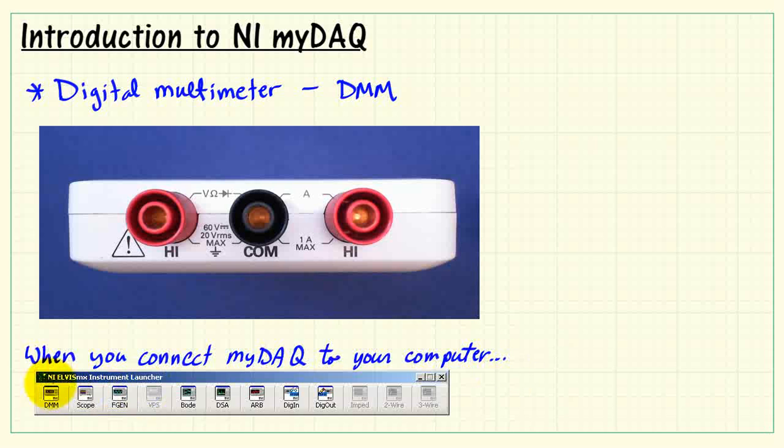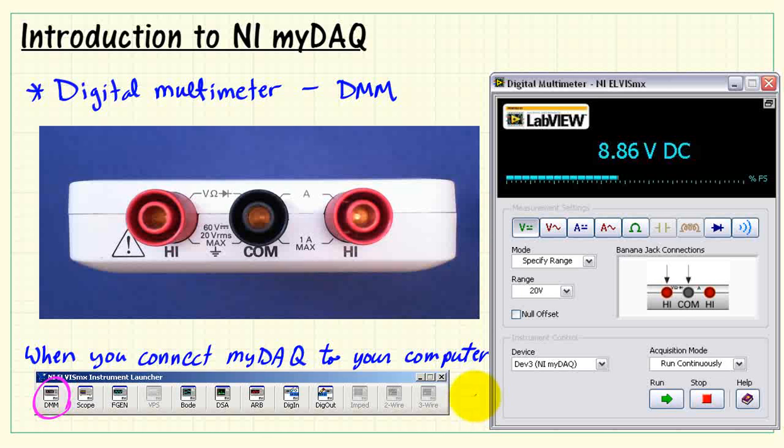Now, when you connect MIDAC to your computer, the NI-ELVIS MX instrument launcher fires up automatically, and so you can click DMM, and then you see this instrument panel right here. We have DC volts, AC volts, DC amps, AC amps, resistance, and some additional measurements associated with diodes and continuity of wires.